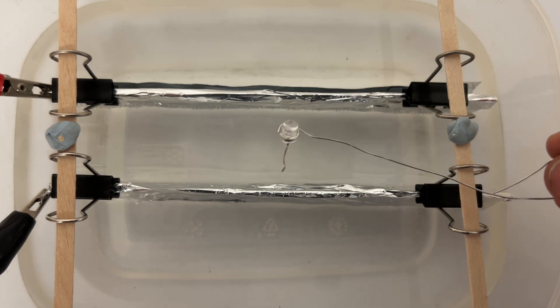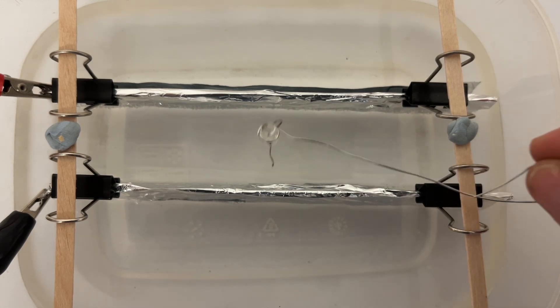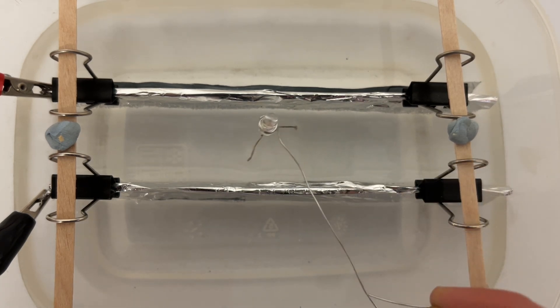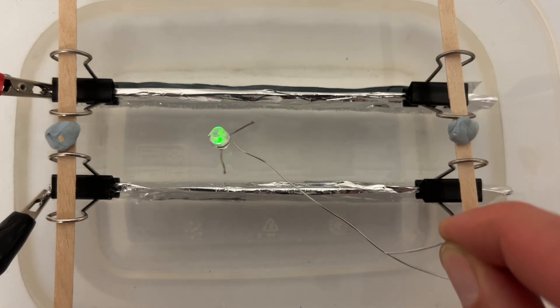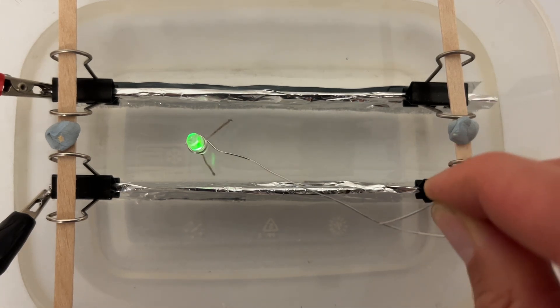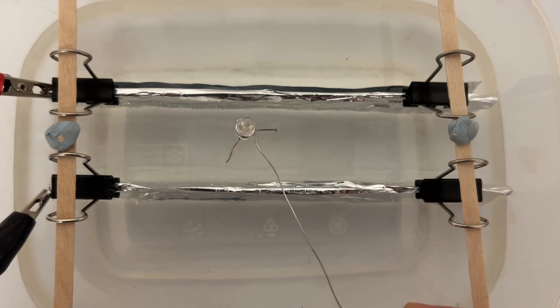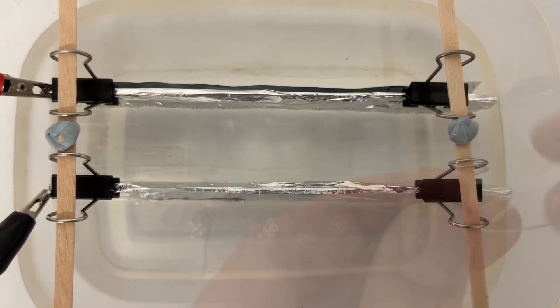If you move the legs of the LED closer together, the LED gets dimmer because there's a smaller potential difference. You can also rotate the LED to increase and decrease the potential difference between the legs and make it go on and off.